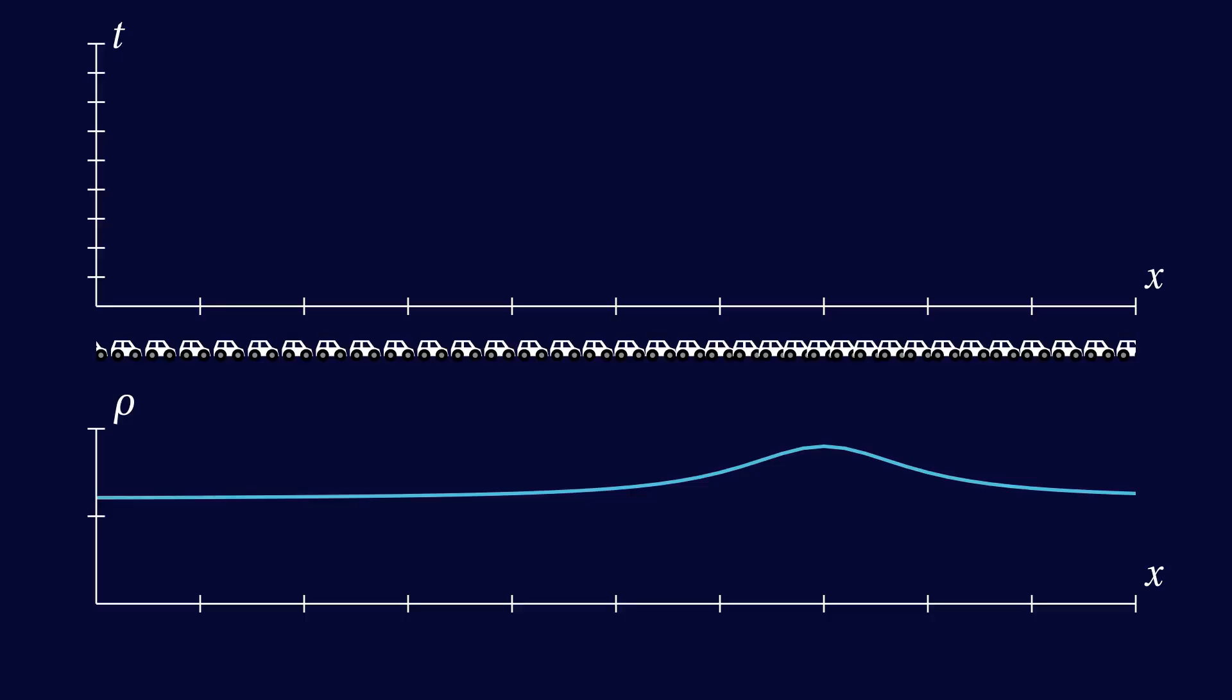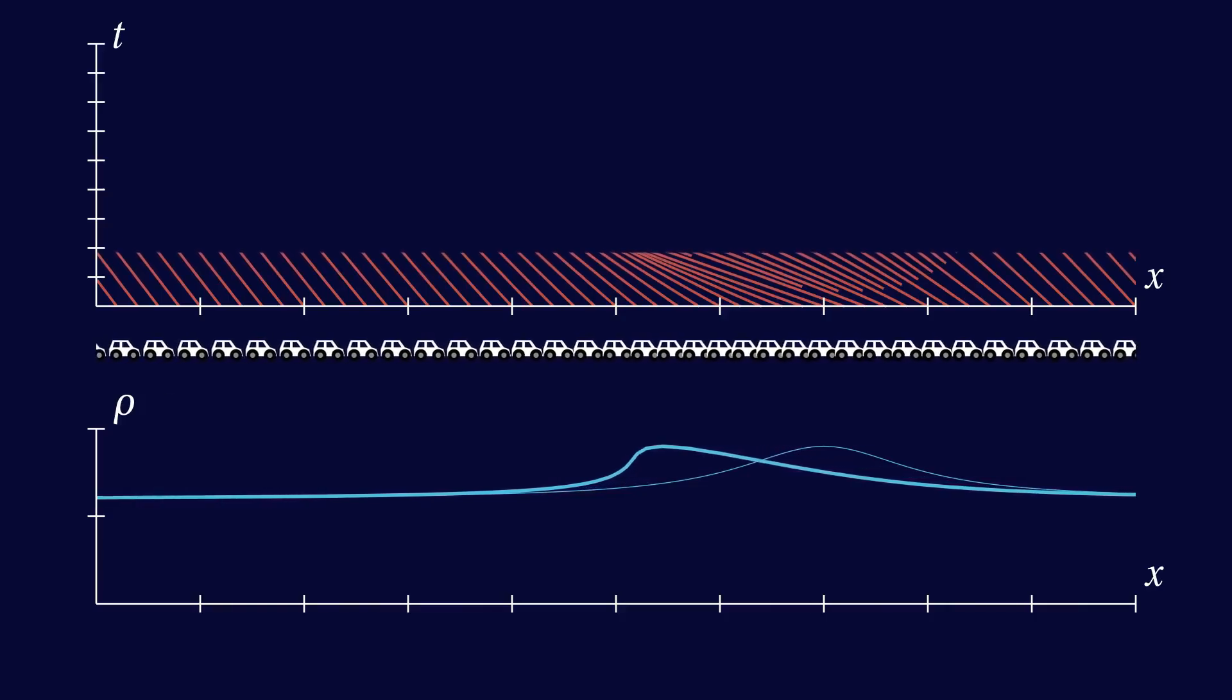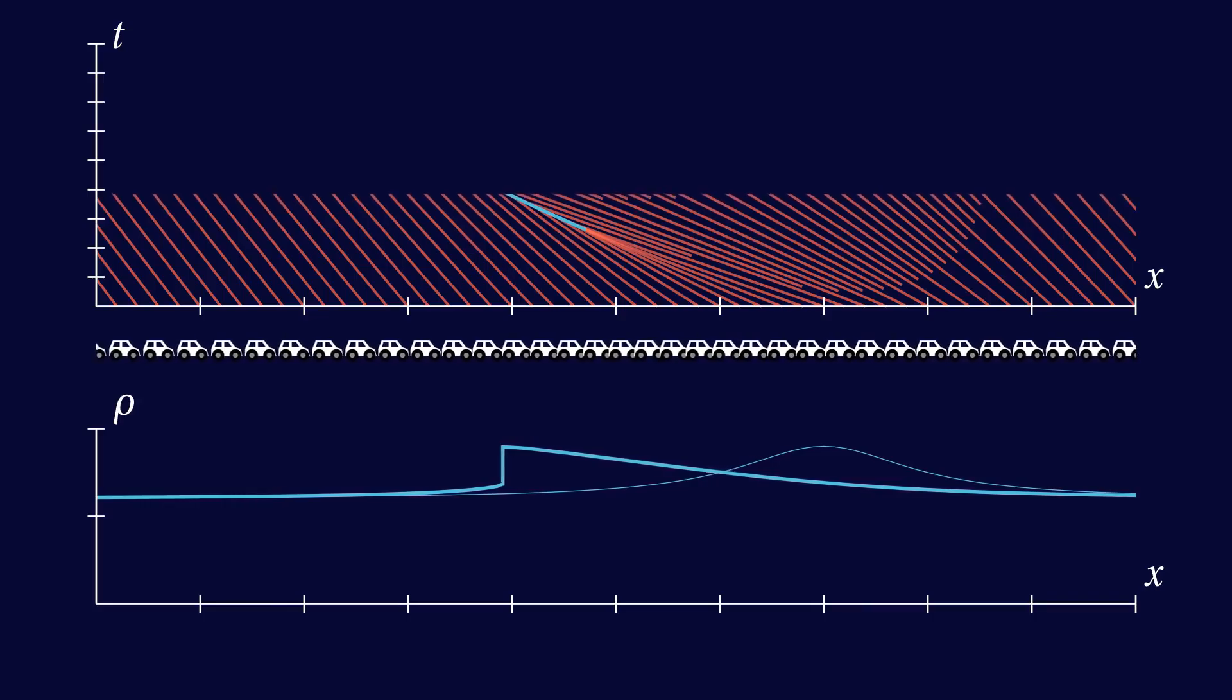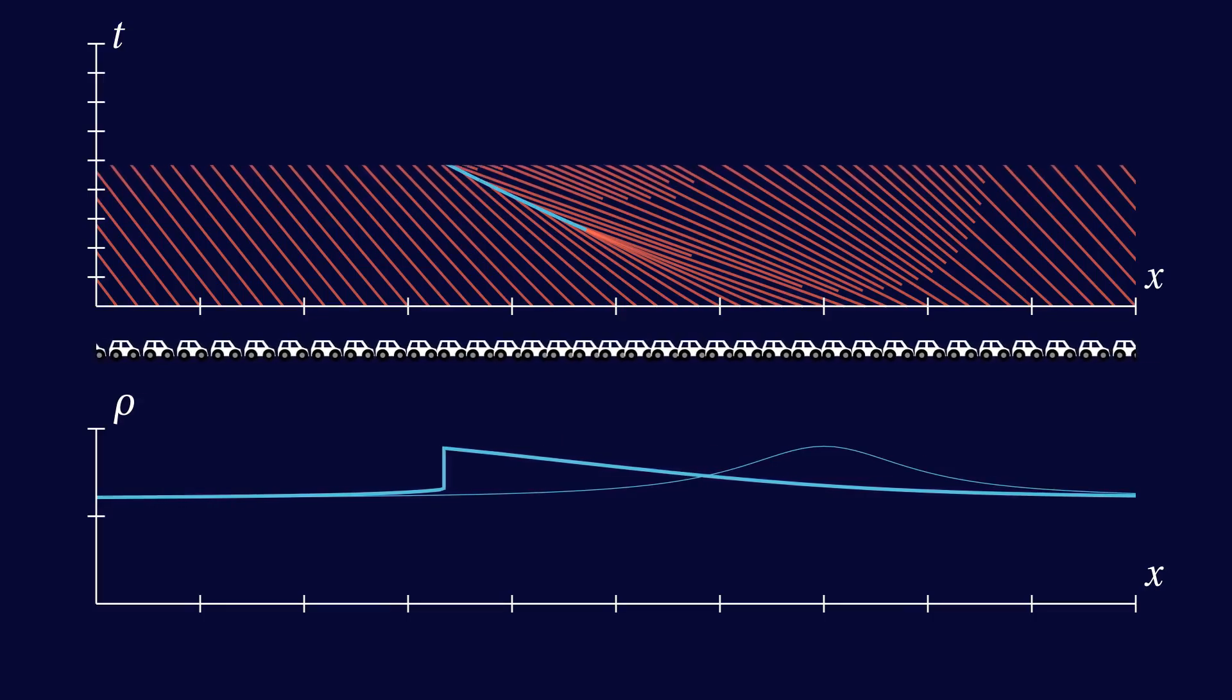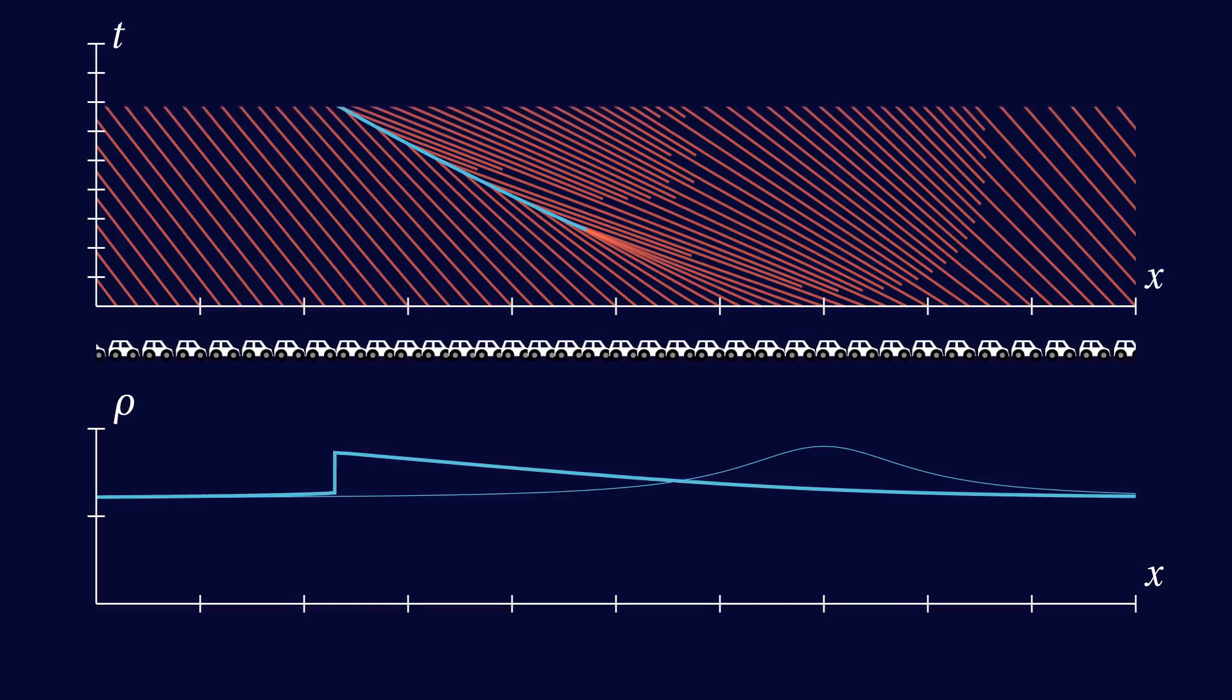Next, let's look at a lump of denser traffic on a road that already has heavy traffic. Remember that heavy traffic means that the density is more than half the maximum density and that the characteristics slope backwards. Again, the shock that is formed moves backwards, and now it keeps going backwards, and the peak in density stays large.